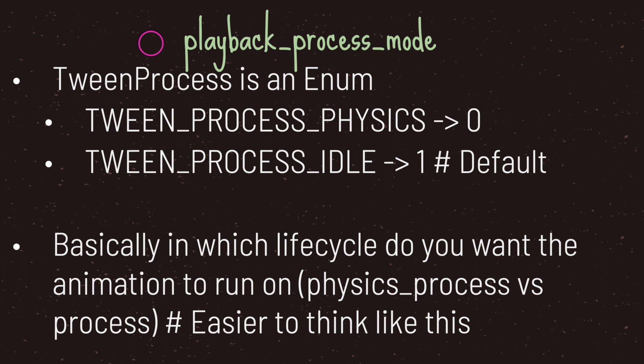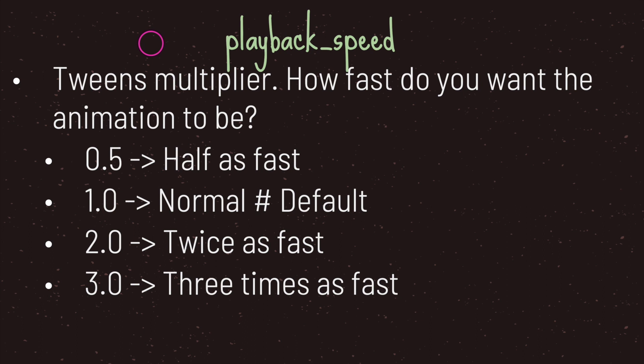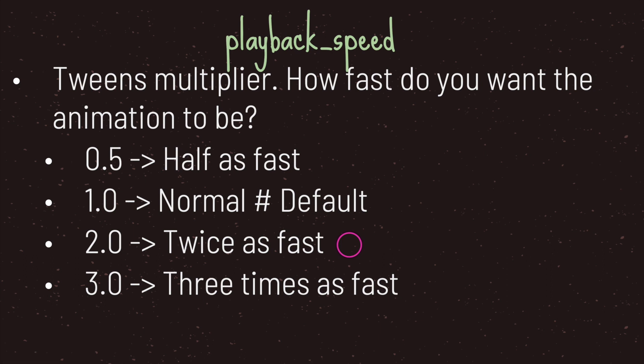My recommendation is not to change the playback process mode, as you are trying to get the smoothest animation possible over a specified amount of time. Playback speed is a multiplier — basically how fast you want the animation to be. The default value of 1.0 is normal speed. Anything below one slows it down, so 0.5 would be half as fast, while 2 would be twice as fast.